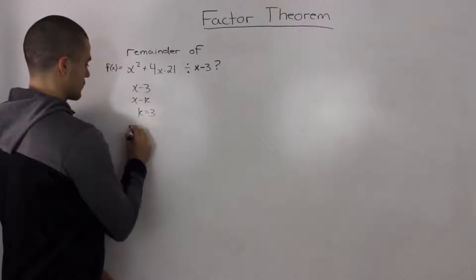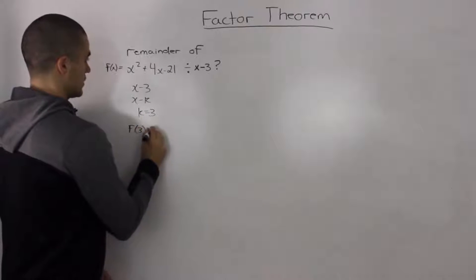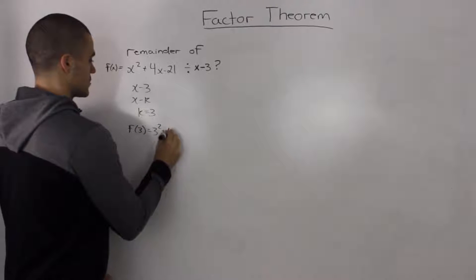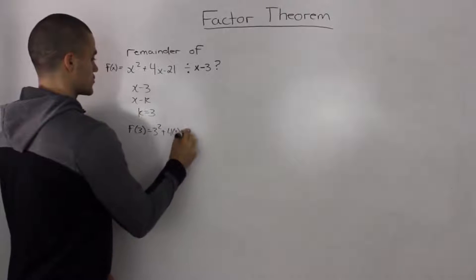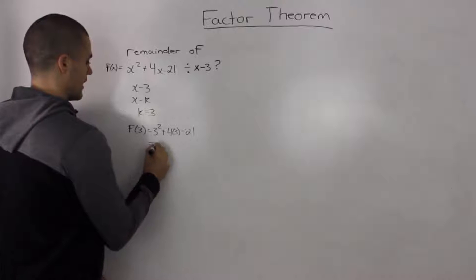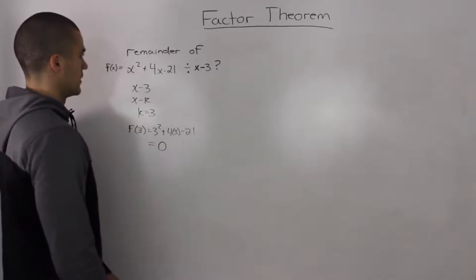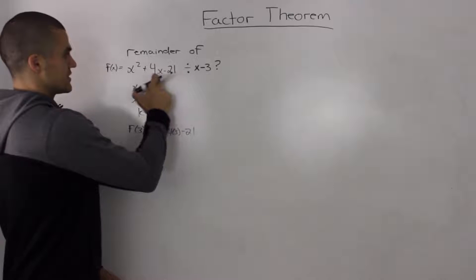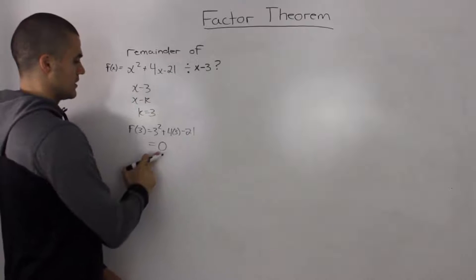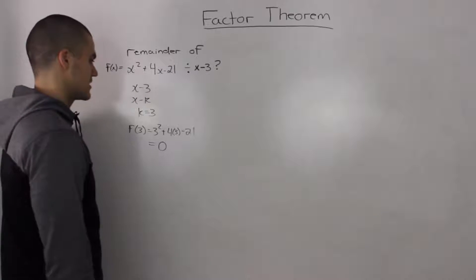So f(3) = 3² + 4(3) - 21 = 0. When this dividend is divided by x - 3, the remainder is 0.